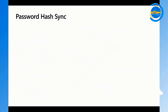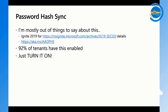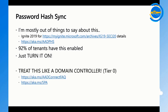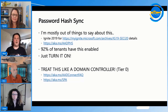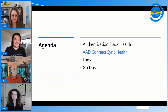On password hash sync: 92% of tenants now have it enabled, up from 91% at Ignite 2019. Please turn this on — it's super important. For those who already have it on, treat it like a tier zero resource, just like a domain controller, because the Azure AD Connect server with PHS may have equivalent permissions to a domain controller.